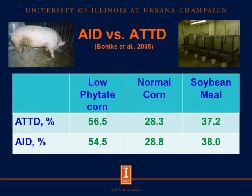First, we're talking about apparent ileal digestibility versus apparent total tract digestibility. Here are some data from a paper published in the Journal of Animal Science by Bolker et al., in which three feed ingredients were used: a low phytate corn, a normal corn, and soybean meal. Both apparent total tract digestibility and apparent ileal digestibility were measured, and for all three ingredients there was no difference between the two values. This indicates both can be used because they are virtually the same. However, it is easier and less expensive to measure total tract digestibility, so we suggest using that.